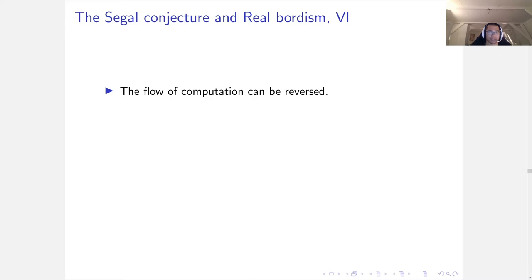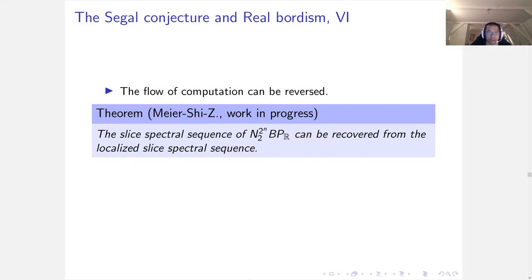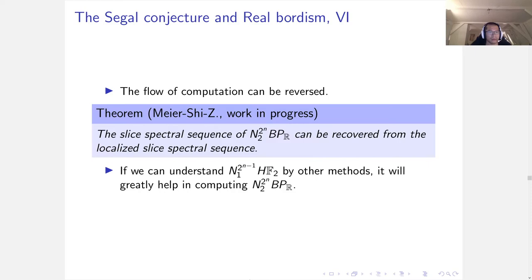Finally, we realize the flow of the computation can go in the other way. In work in progress, we will show that the slice spectral sequence of norm of BP_R can be recovered from the localized slice spectral sequence. That means if we can understand norm of HF2 by other methods, it will help a lot in computing norm of BP_R.